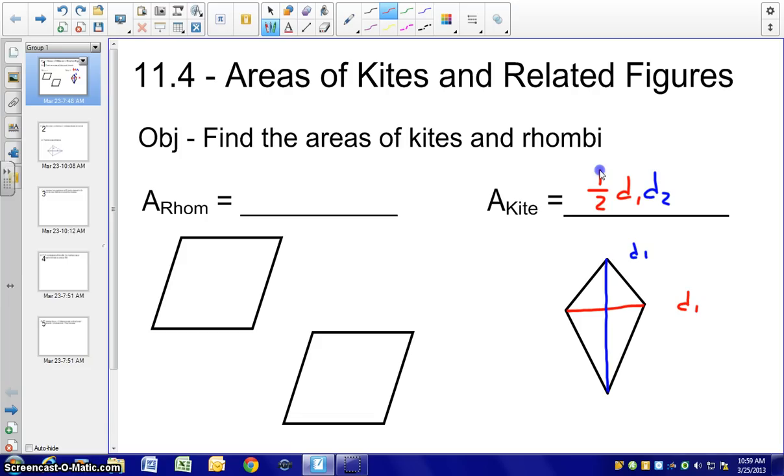Moving over to a rhombus. Now a rhombus is a special kite, so the same formula, one half D1 D2, would apply for a rhombus. But we also know that a rhombus is a parallelogram, so base times height would also work. Again, the base and the height being perpendicular to that base.